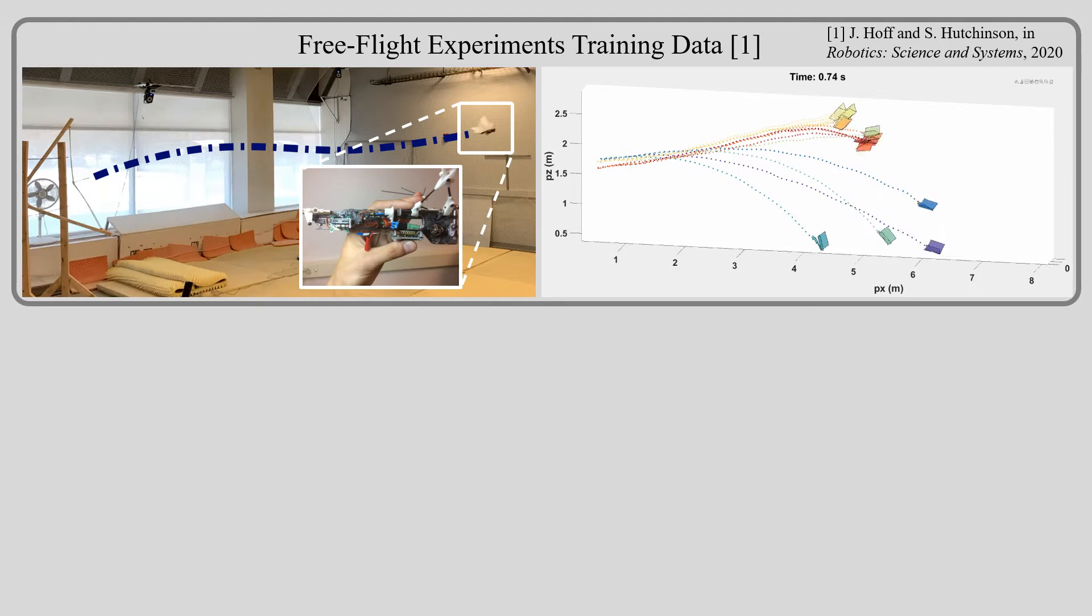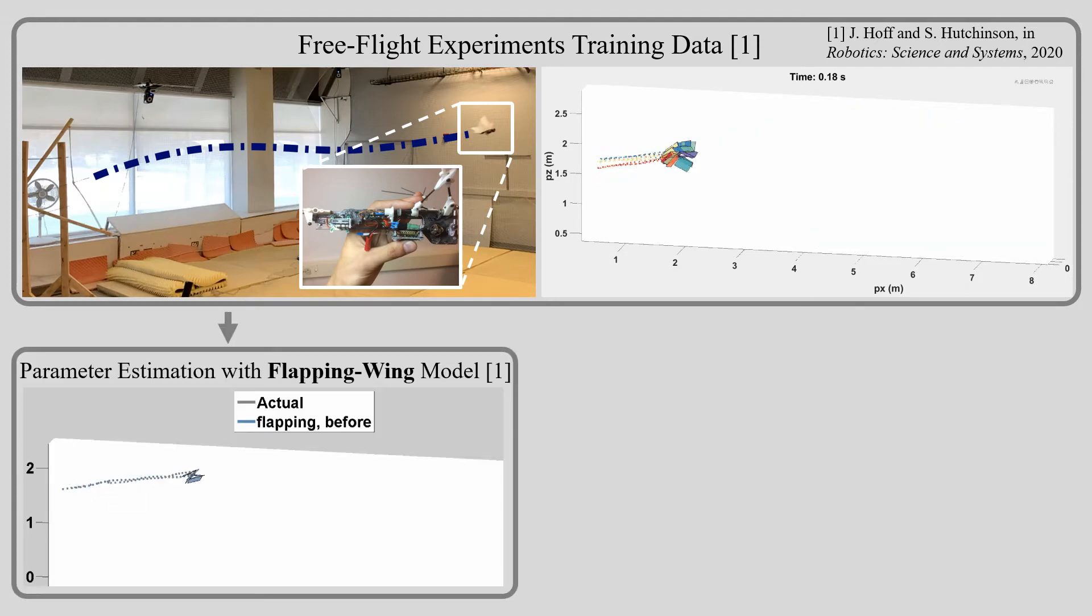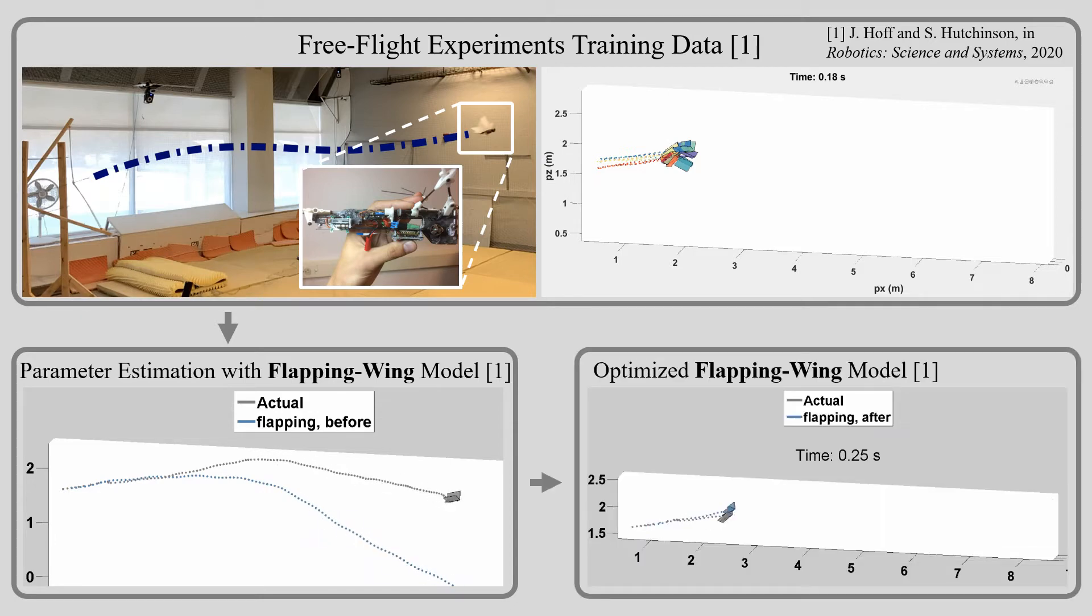In our past work, we recorded a set of flight experiments with the robotic BAT B2. We created a parameter estimation method for training model parameters, and the result was dramatically improved flight performance for the system.